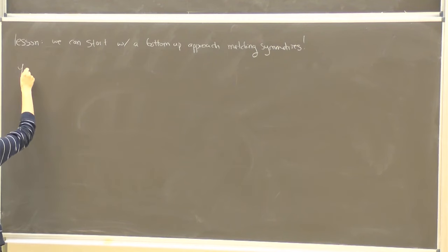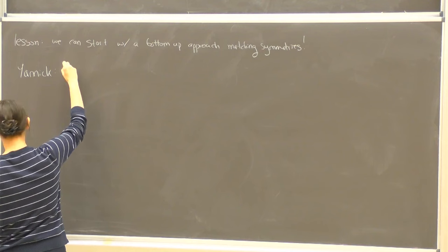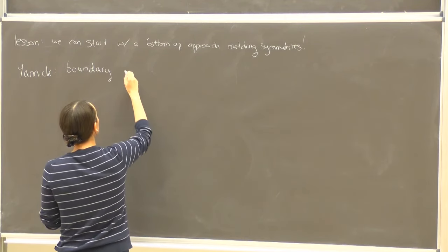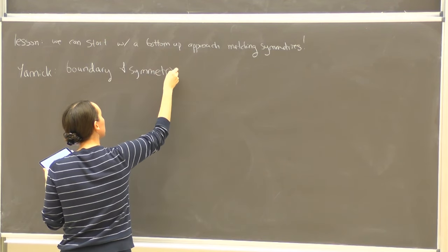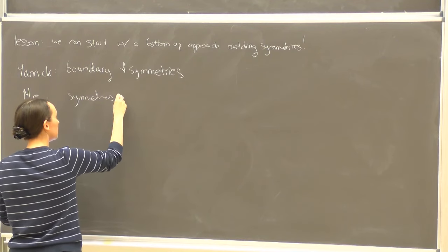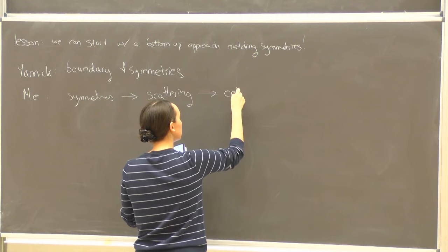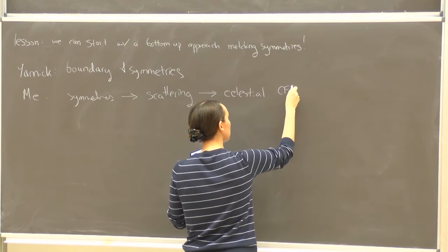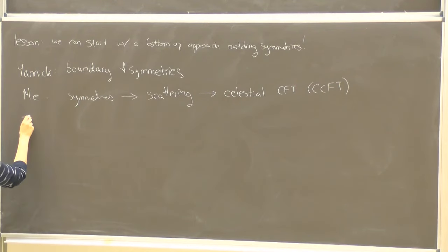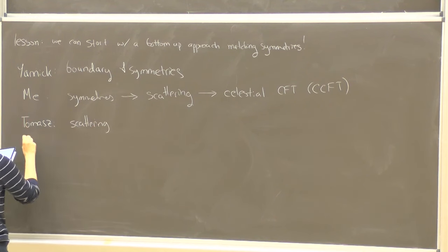Let me say how the different lectures fit in. Yannick's first lecture was nice because it wasn't just following Bondi-van der Burg-Metzner-Sachs — he's going to teach us about the boundary of spacetimes with lambda equals zero and their symmetries. My goal is to tell you how those symmetries tell us about scattering and how to map to the celestial CFT — if I ever write CCFT that's what I mean, though Yannick and Laura would say CCFT should be Carrollian CFT. Tamaz is going to tell us about scattering, and Piotr obviously about CFT.